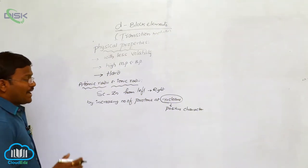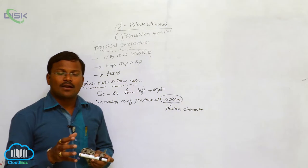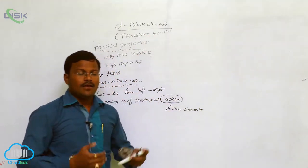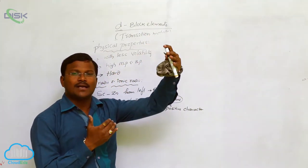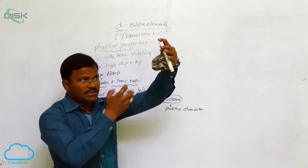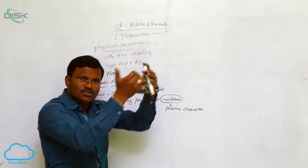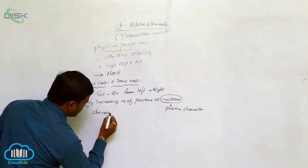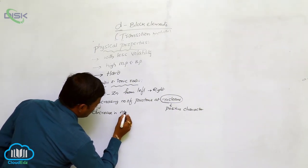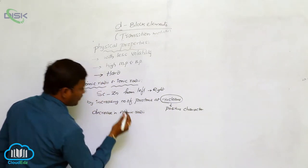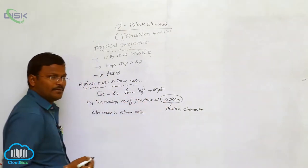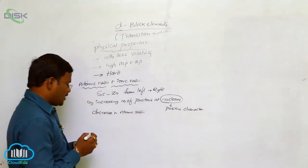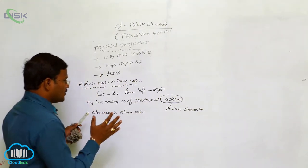By increasing the positive character of the nucleus, the attraction of the nucleus onto the valency orbit also increases. When the nucleus strongly attracts the valency orbit, the valency orbit comes closer to the nucleus — resulting in a decrease in atomic radii from left to right, that is from scandium to zinc, yttrium to cadmium, or lanthanum to mercury.